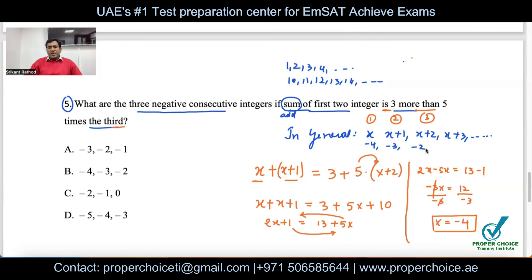The third number is −4 + 2 = −2. So the three consecutive negative integers are −4, −3, −2 — option B.